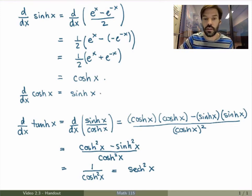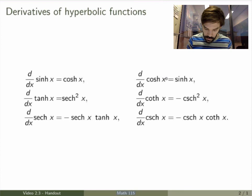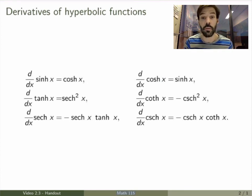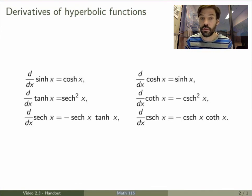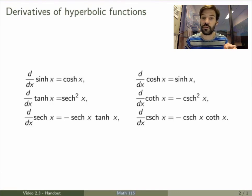You can keep going and calculate the other ones if you wish. Here's the result — these are all the derivatives: sine, cosine, tan, cotan, secant, cosecant — all hyperbolic functions. Now you see they look very similar to the trig formulas, but the signs are different. So again it's very easy to make mistakes when you deal with hyperbolic functions — you have to be extremely careful to get the signs right.